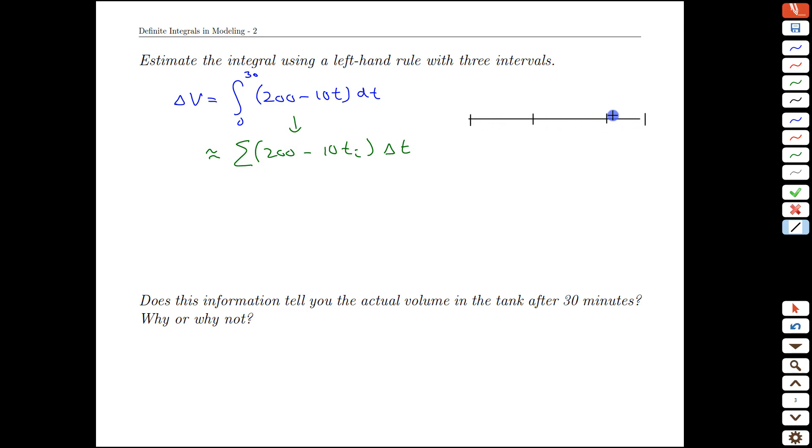Well, if we are using three intervals and we are doing that over 30 minutes, then the natural time breaks are 0, 10, 20, and 30 minutes. That points to a delta T of 10 and so we can go straight to our sum.